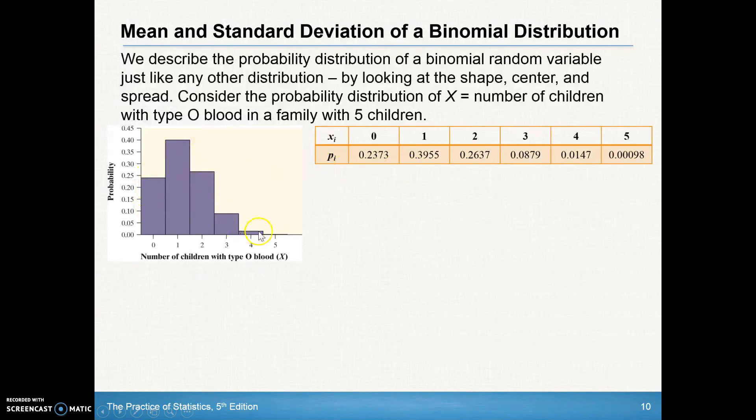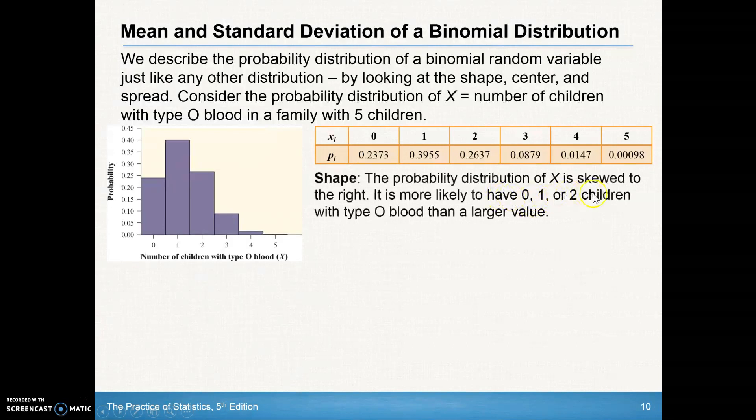Our distribution over the side here does look a little skewed to the right. The probability distribution is skewed to the right, so it's more likely to have zero, one, or two children out of five with type O blood.